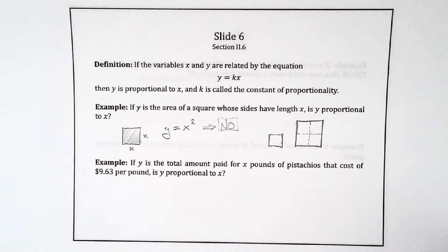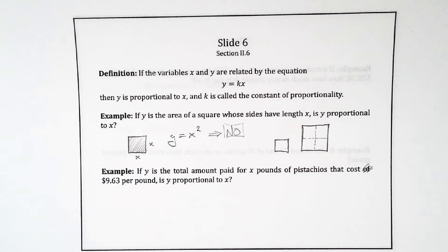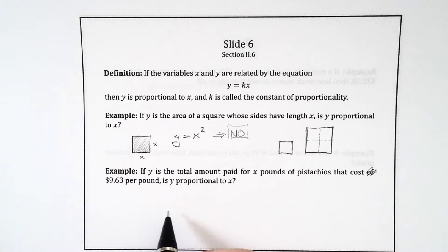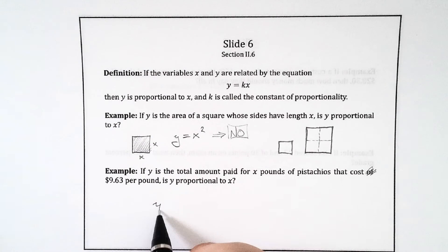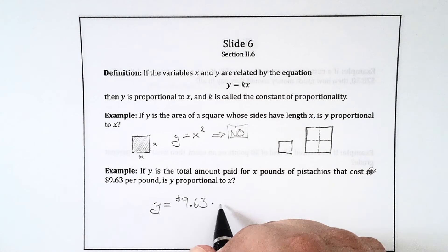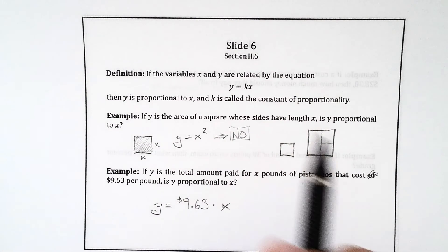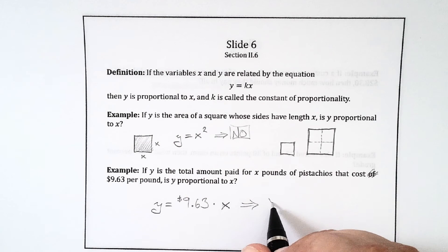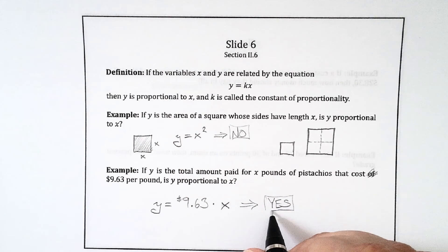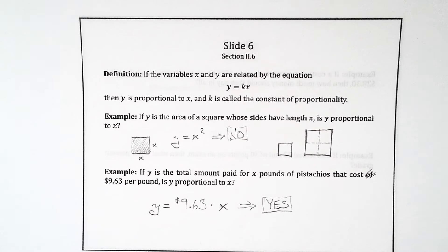In this next example, we see something else happening. If y is the total amount paid for x pounds of pistachios that costs $9.63 per pound, which is a typo, is y proportional to x? Well, y is the total amount and it's going to be x times the price per pound. So it's $9.63 per pound times the number of pounds that you're buying. Well, that's exactly what we're looking for. The $9.63 is the k. Therefore, the answer is yes. If I double the amount of pistachios I'm buying, am I going to be paying twice the amount? The answer is yes. That's because you're buying them in bulk.